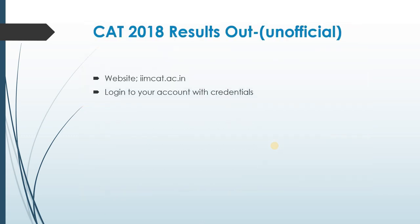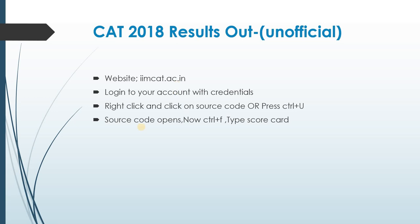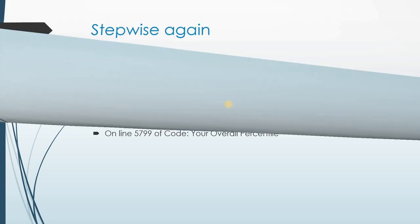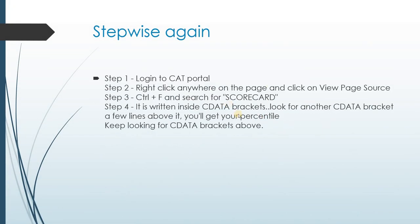The website is iimcat.ac.in. Step one: login to your account with your credentials. Step two: right-click anywhere on the page and click on 'View Page Source', or press Ctrl+U. The source code will open. Step three: press Ctrl+F and type 'scorecard' to search within the source code.